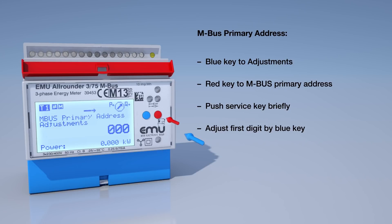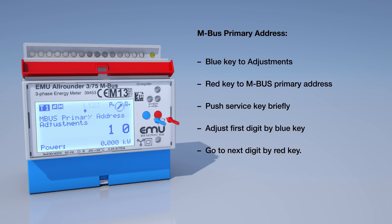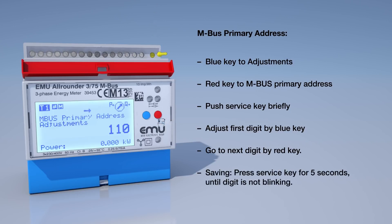The blue button now lets you change the first number. Press the red button to continue on to the next digit, which you can then adjust using the blue button. Once you have configured the MBUS Primary Address, hold the service button for 5 seconds to save.